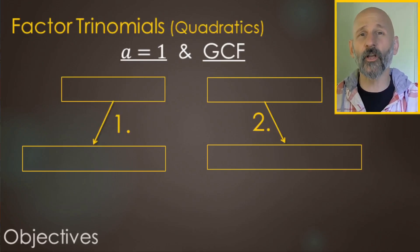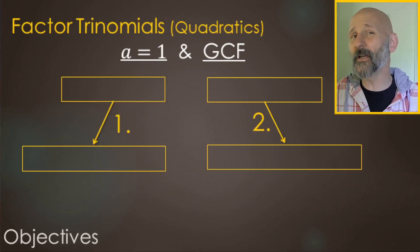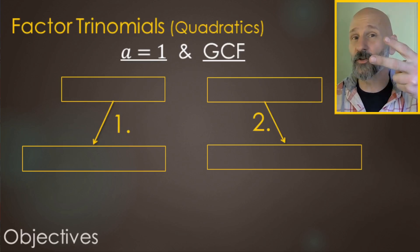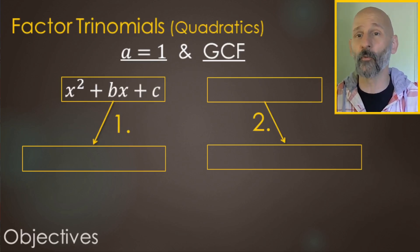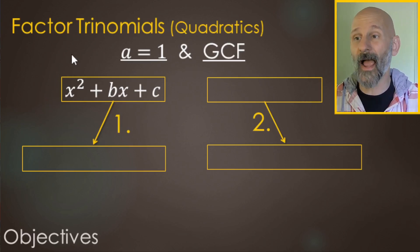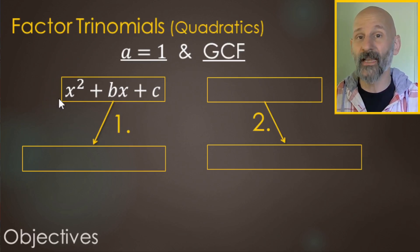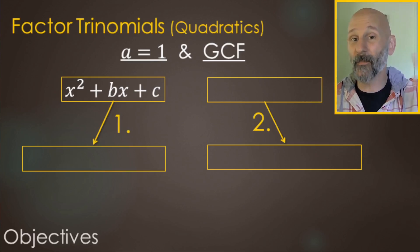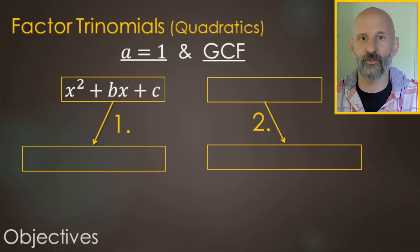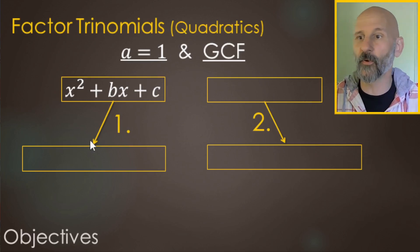In this video we're going to be factoring trinomials. There are going to be two styles we're working on. One when a equals one — in this case there's no actual coefficient, no number in front of the x squared, so that means you have one x squared. That's what it means when we talk about a equals one.